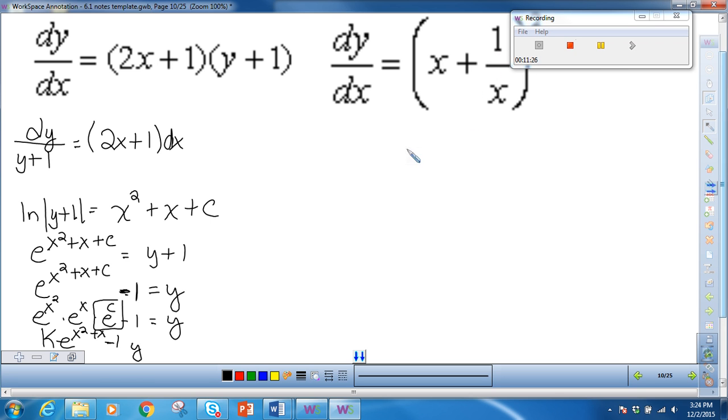All righty. Last one. I just need to separate the variables. And I have dy is equal to x plus 1 over x dx. And then I just integrate each of those. So this is going to give me y is equal to x squared over 2 plus the natural log of x plus c. And that's pretty much it.